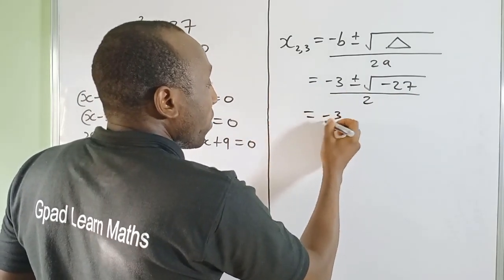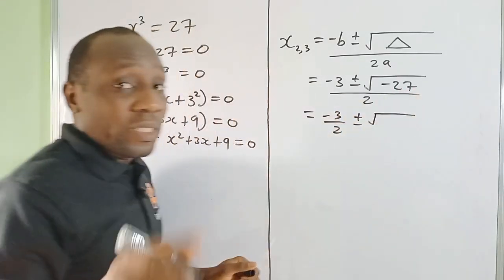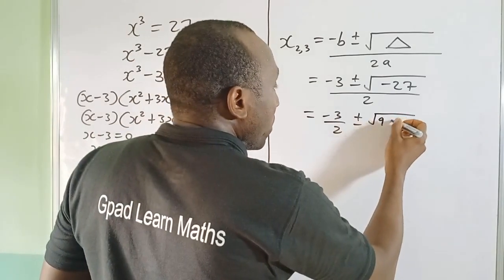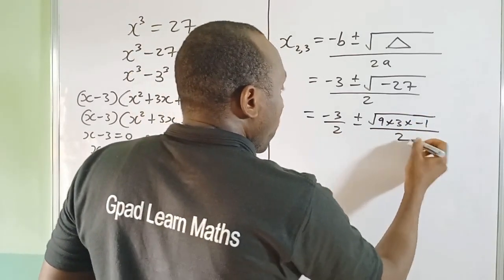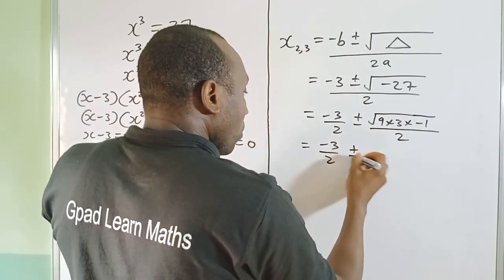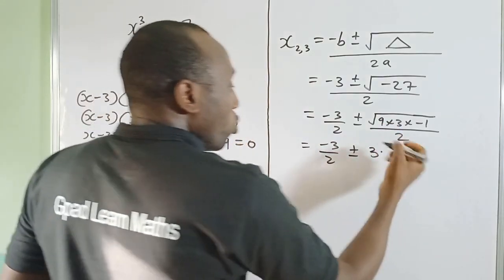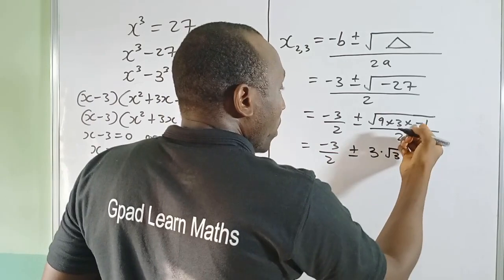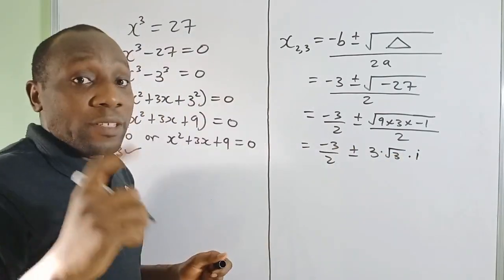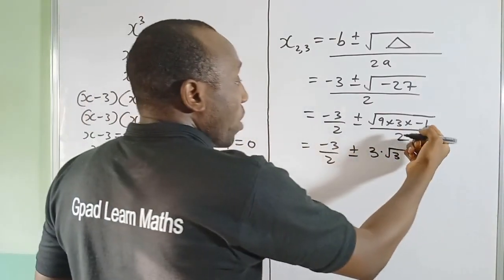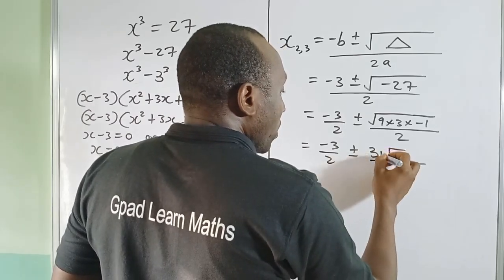This gives us −3/2 ± √(−27)/2. We can split −27 as 9 × 3 × (−1). So √(−27) = 3√3 · √(−1) = 3i√3, since i represents √(−1) for complex numbers. The expression becomes −3/2 ± 3i√3/2.